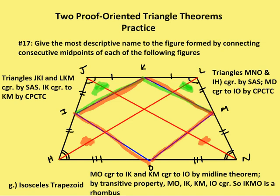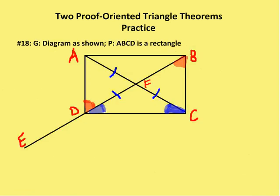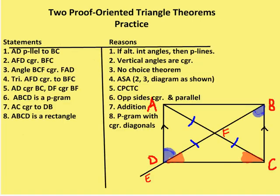I believe I have just one more problem. Now the diagram is shown and I want to prove that ABCD is a rectangle. I have AD parallel to BC — why? Because angles ADF and CBF are congruent from the diagram. If alternate interior angles are congruent, then I have parallel sides, so AD and BC are parallel to each other.